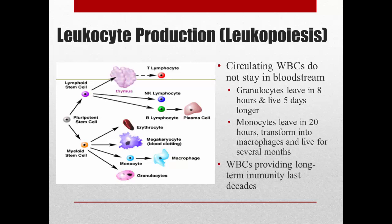Leukocyte production is called leukopoiesis. It develops from a pluripotent cell that differentiates into either lymphoid or myeloid stem cells. The myeloid stem cell becomes all white blood cells except lymphocytes — so basophils, neutrophils, eosinophils, and monocytes, which become macrophages. The lymphoid stem cell differentiates into T-cells, which finish development in the thymus; B-cells, which finish in bone marrow and become plasma cells that make antibodies; and natural killer cells, which don't circulate in blood but are important for immune response.